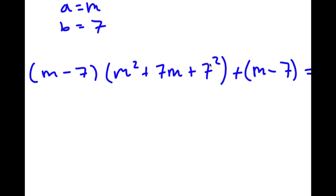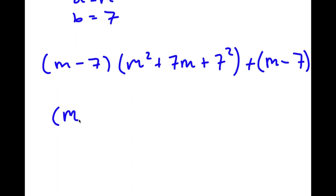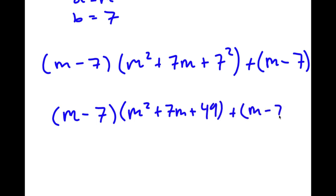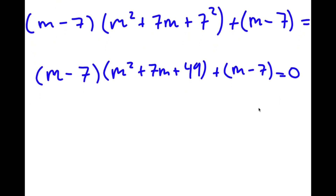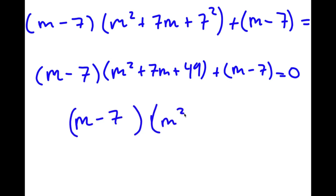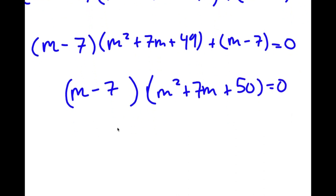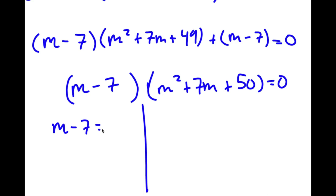Since 7 squared is 49, I have (m minus 7)(m² plus 7m plus 49) plus (m minus 7) equals 0. Factoring out (m minus 7), I get (m minus 7)(m² plus 7m plus 49 plus 1) equals 0, which is (m minus 7)(m² plus 7m plus 50) equals 0. This gives me two equations: m minus 7 equals 0, and m² plus 7m plus 50 equals 0.